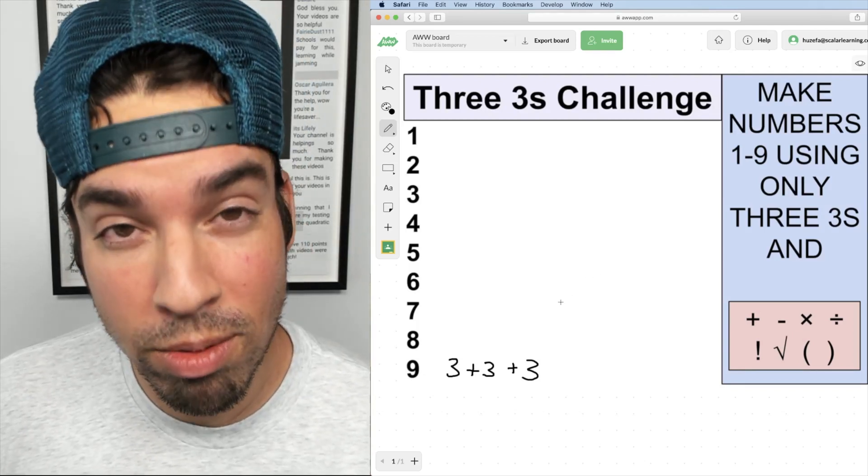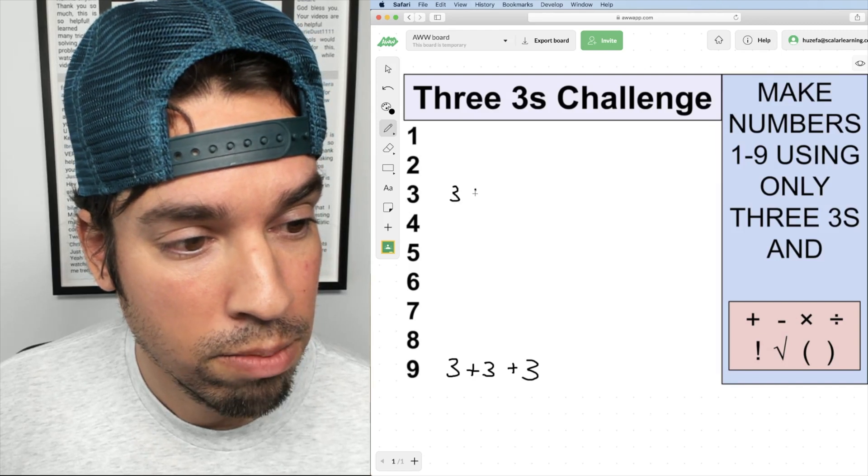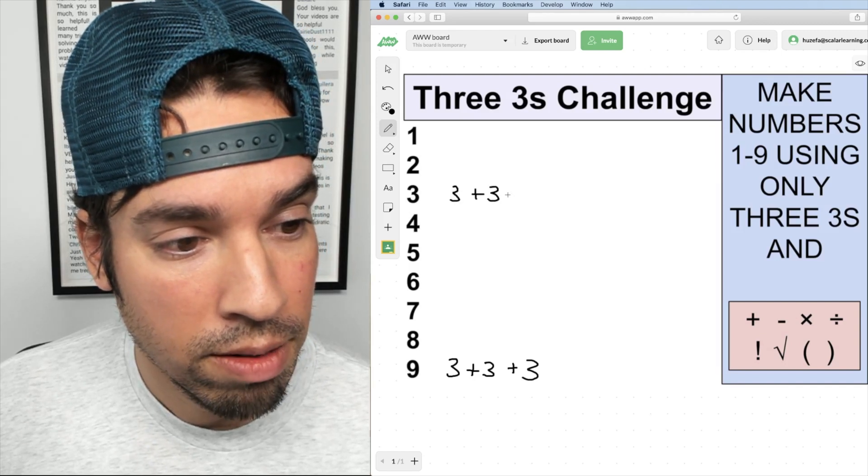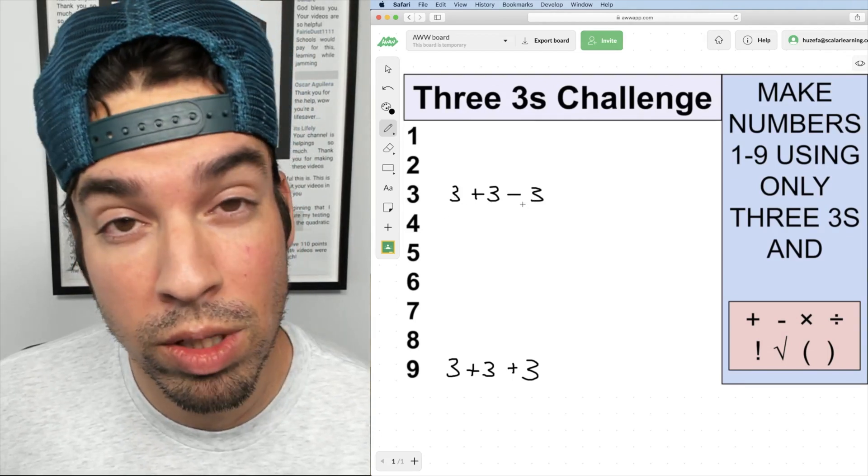Next I'm going to go to three. Three also seems fairly straightforward. I'm going to do three plus three minus three, and that gives me six minus three is back to three, so we're good to go.